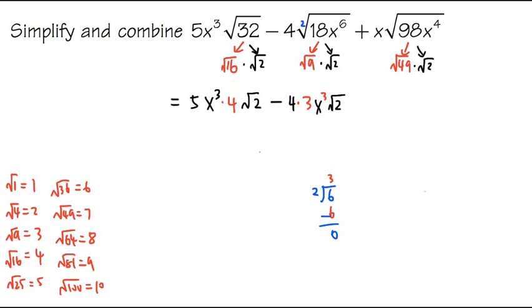This means we can do what? x to the 3rd power outside. Let me write down x to the 3rd power outside. And 0 remainder means we have 0x inside. This is what we have. Once again, this is the power for the x, not the cube root.